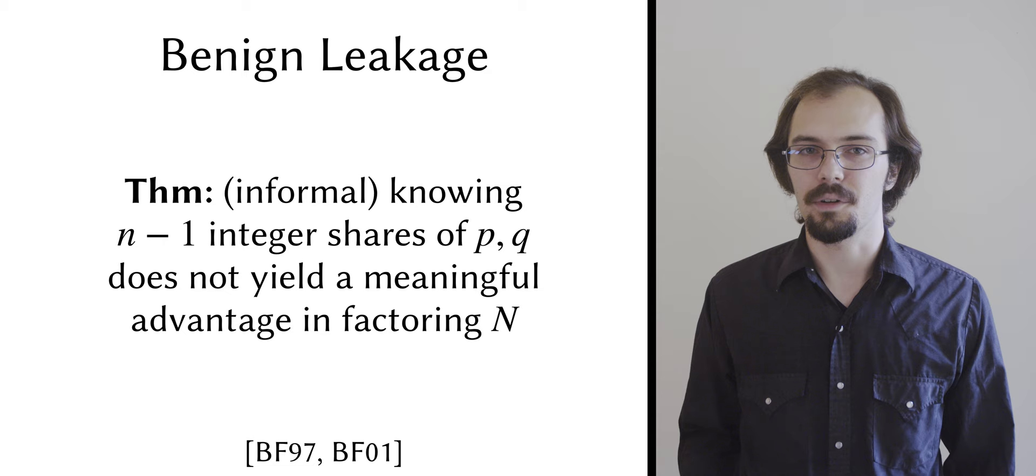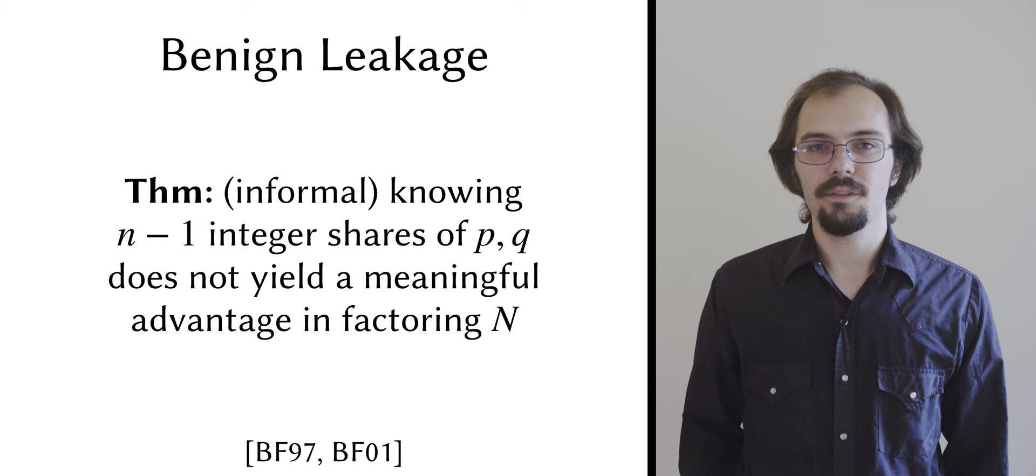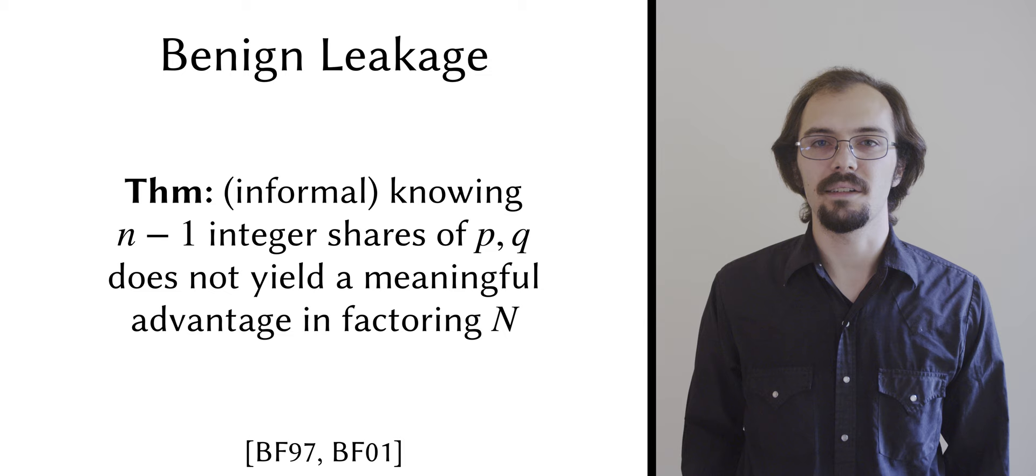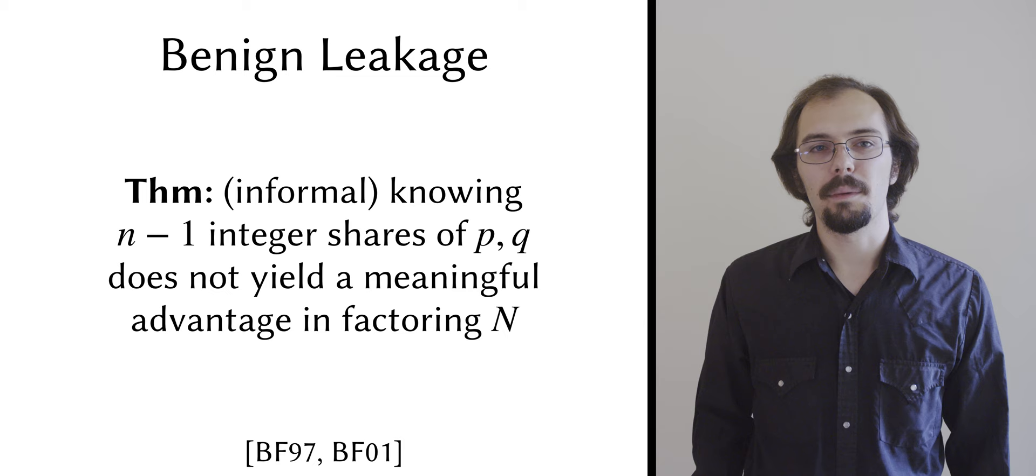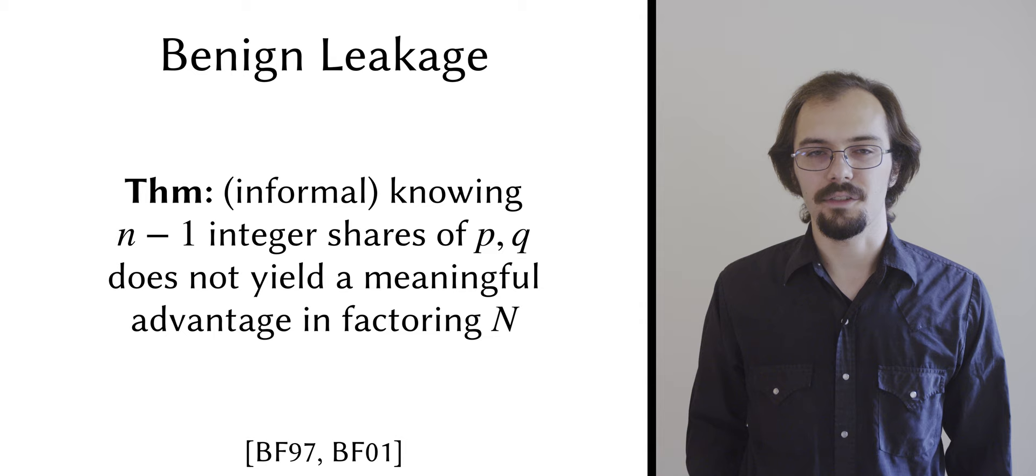Although the Bonet-Franklin test itself is efficient, the downside is that it requires us to guess two long prime numbers simultaneously in order to succeed, instead of just one as in the case of individual primality testing. To increase the probability of success, Bonet and Franklin try to filter out some of the candidate p's and q's that are obviously not prime before running the test.